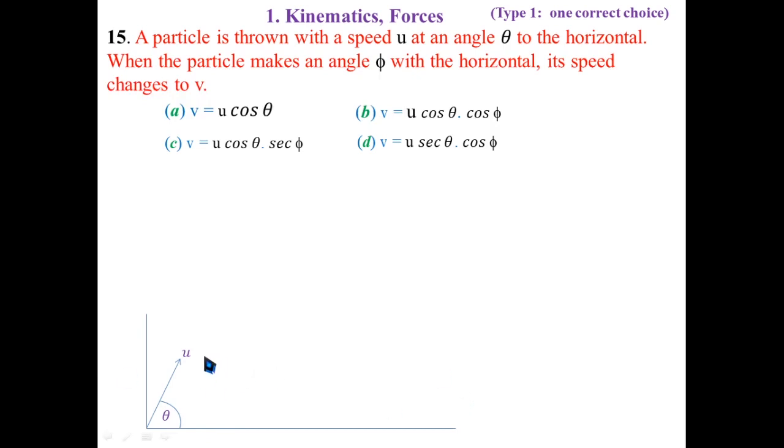This speed is u. We can resolve it in two parts. We can break it in two parts. With x-axis, the value is u cos θ. With y-axis is u sin θ. And with these two velocities, the particles are going on the parabolic path. This is the trajectory.